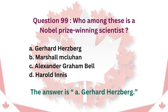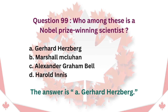Question 99: Who among these is a Nobel Prize winning scientist? A. Gerhard Herzberg. B. Marshall McLuhan. C. Alexander Graham Bell. D. Harold Innes. The answer is A. Gerhard Herzberg.